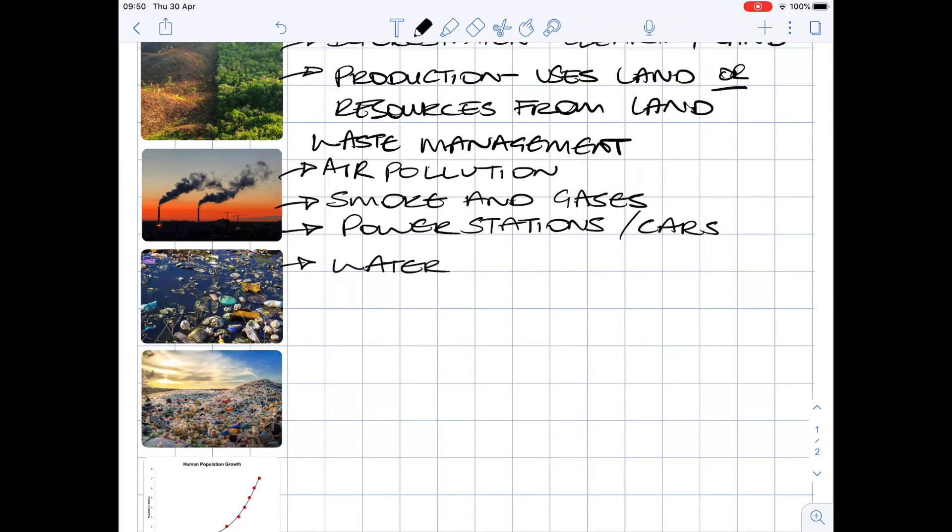Sewage and toxic chemicals, which are produced by industrial practices, as well as excessive fertilizer from agriculture, all find their way into the Earth's water sources.